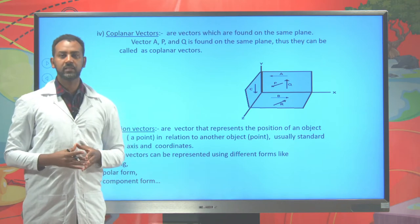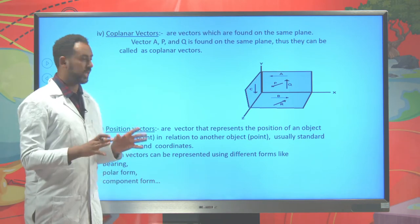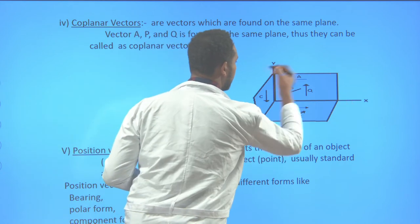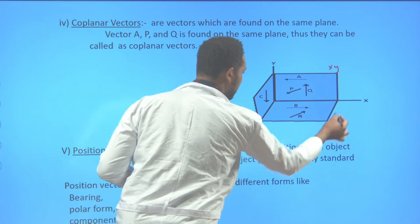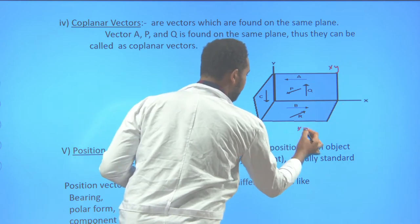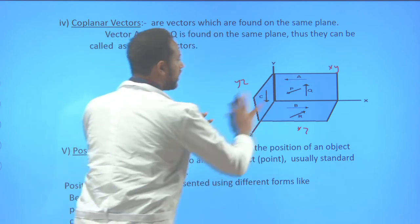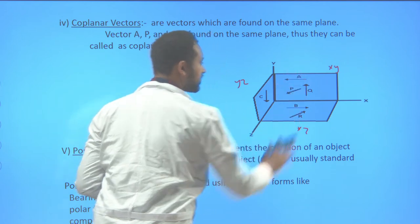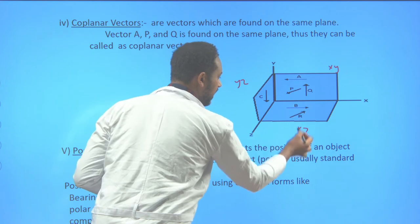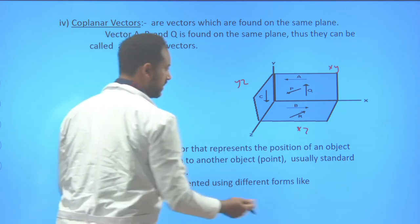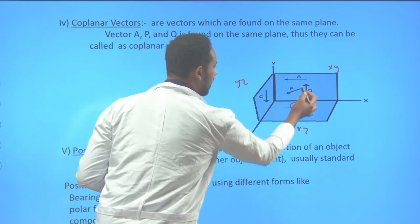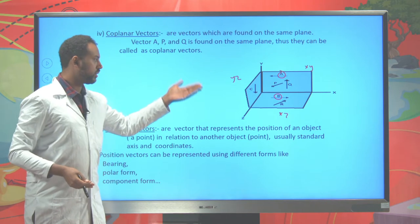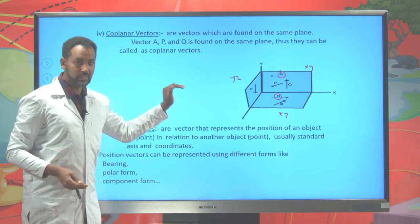Coplanar vectors are vectors found on the same plane. On the x-y-z Cartesian coordinate system, we have the x-y plane, x-z plane, and y-z plane. Vectors a, p, and q found on the x-y plane are coplanar vectors. Vectors b and r found on the x-z plane are coplanar with each other, but vectors from different planes are not coplanar with each other.